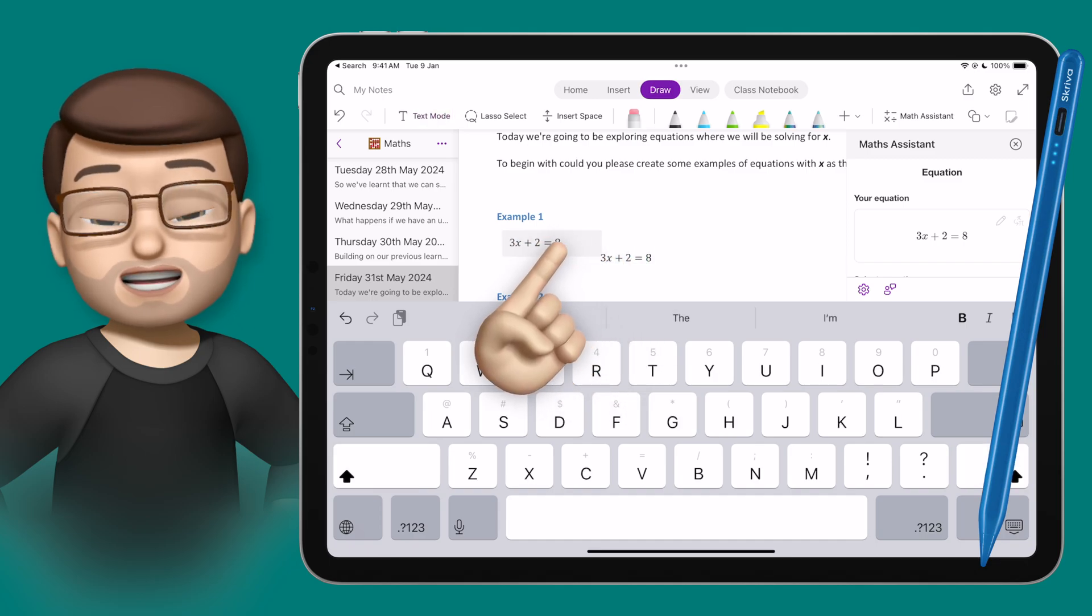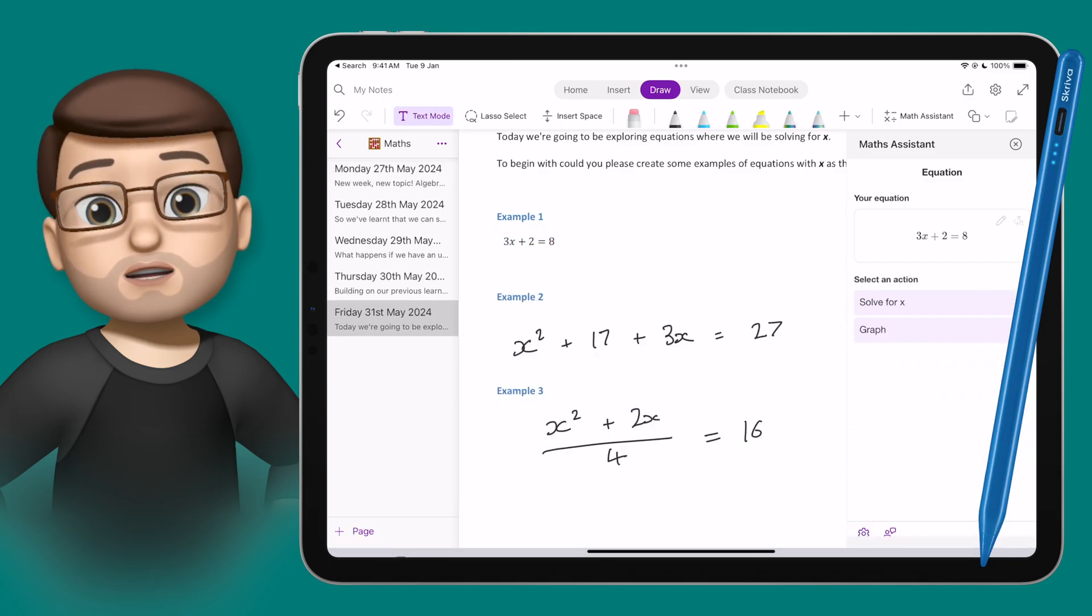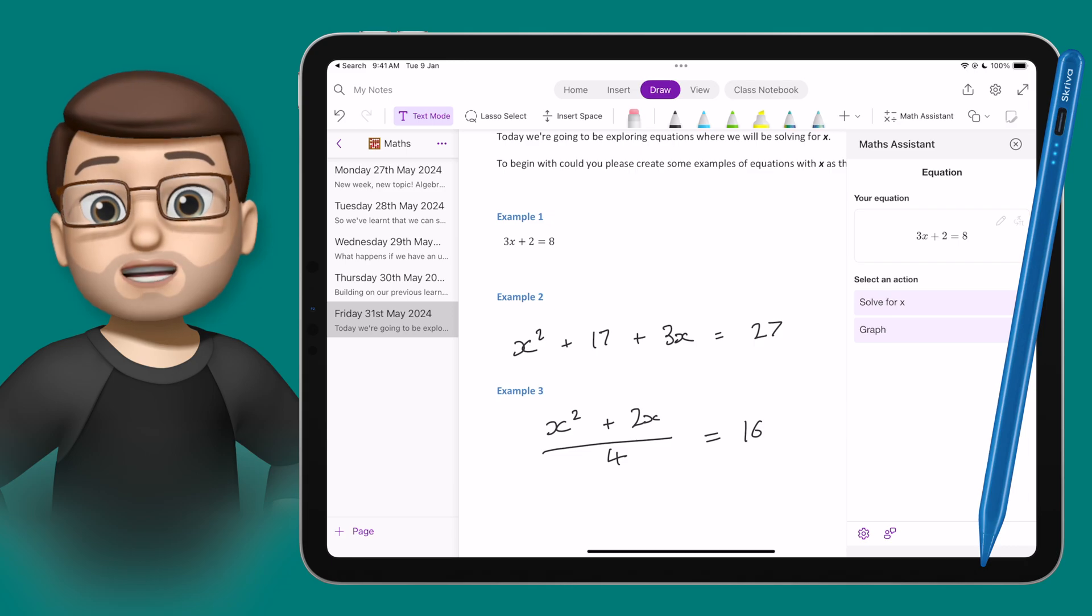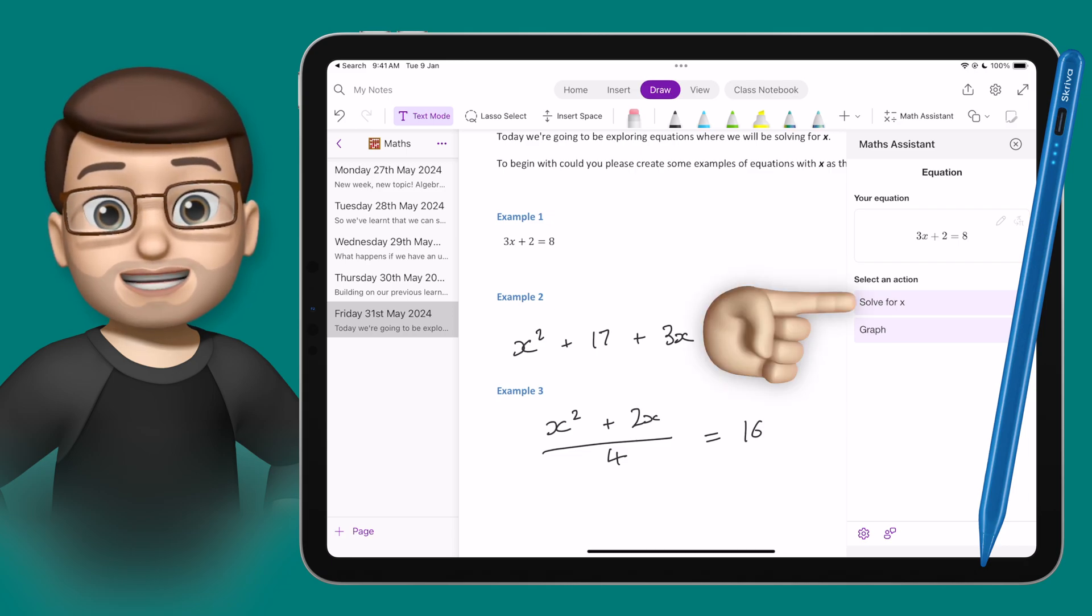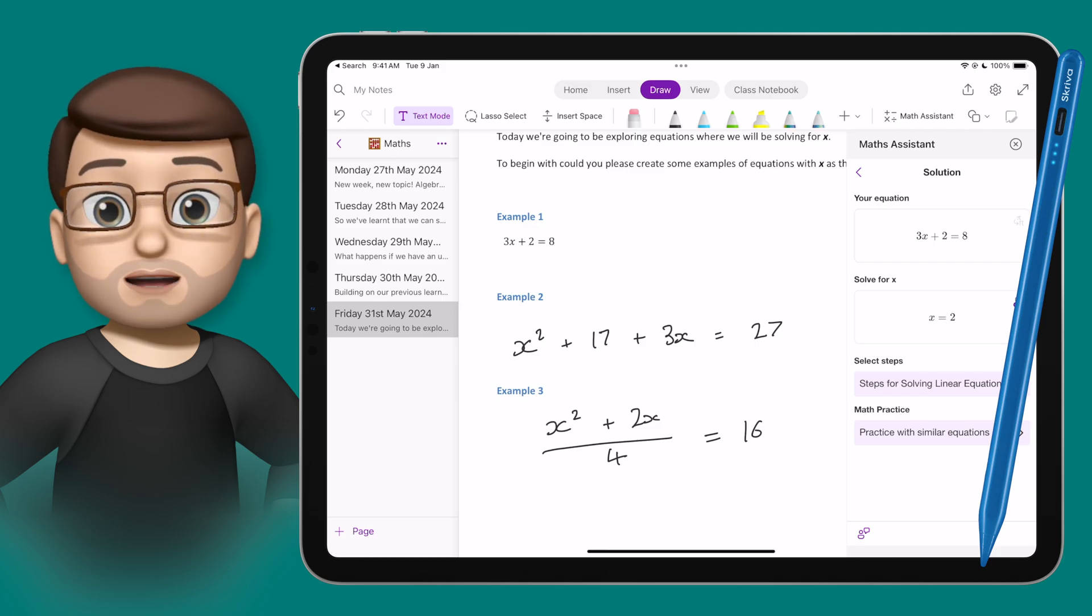Of course, from here, I can move it around, I can change the font size, all the things you can normally do with written text. And if I wanted to, using that Maths Assistant, I could even tap on the one that says Solve for X, and it will calculate the answer for me straight away.